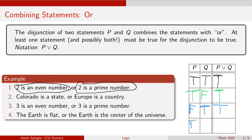Statement four was: the earth is flat OR the earth is the center of the universe. Both of those statements are false, so altogether this disjunction is false. To summarize: as long as at least one of the statements is true, then overall the disjunction of the two statements will be true.